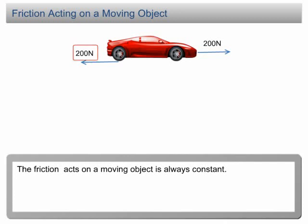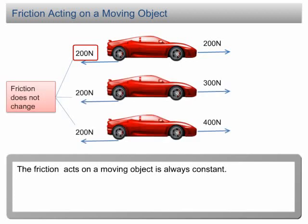When the forward thrust is increased to 300N, the friction is still 200N. When the forward thrust increases to 400N, the friction will remain at 200N. The magnitude of friction will not change according to the forward force.